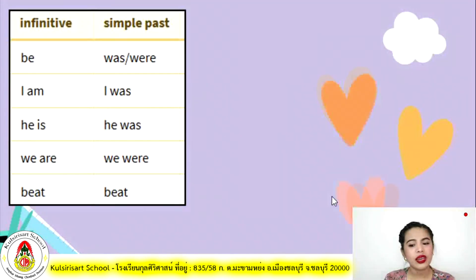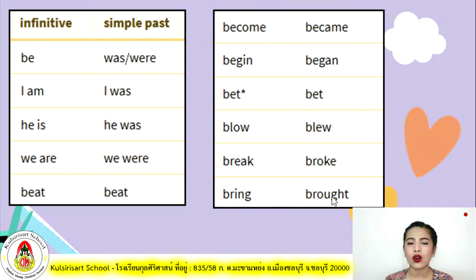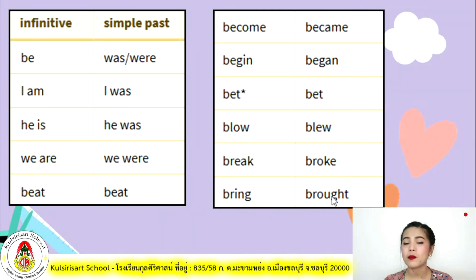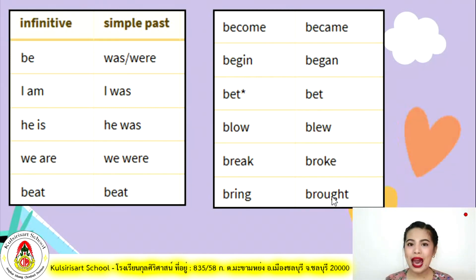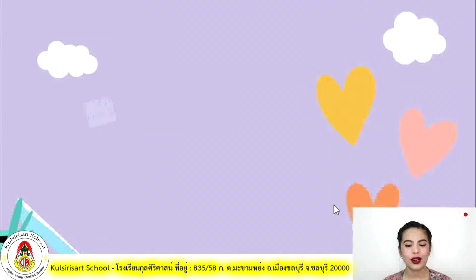Here are infinitive and simple past examples. The past tense of 'be' is 'was' for singular and 'were' for plural — I am/I was, he is/he was, we are/we were. Other examples: bite/bit, become/became, begin/began, bet/bet, blow/blew, break/broke, bring/brought.